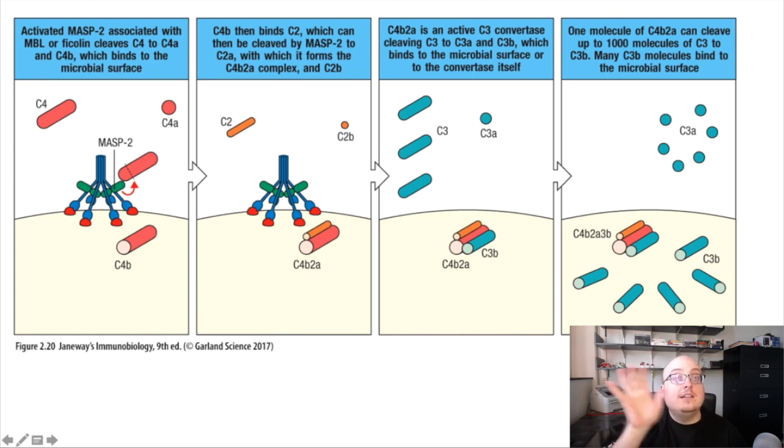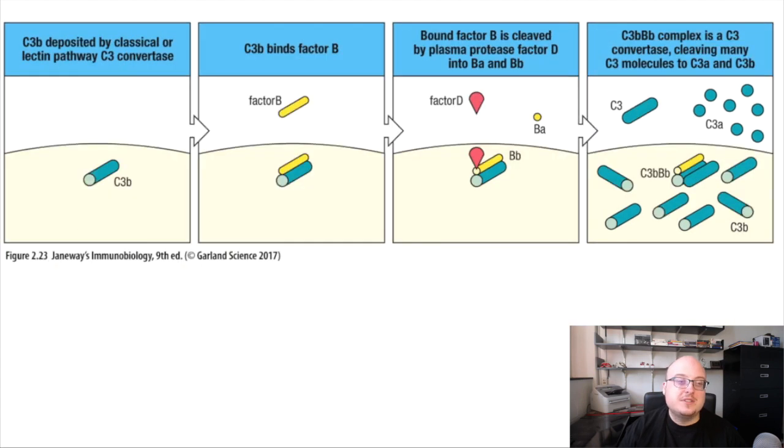So like I said, this is the lectin pathway. The only thing that was different was the very first step. So instead of C1, we had those two lectins, either mannose binding lectin or ficolin. Everything else downstream of that looked the same. Let's talk about the alternative pathway. It's a little bit more complicated, unfortunately, but not too bad. So let's just try to walk through it slowly.